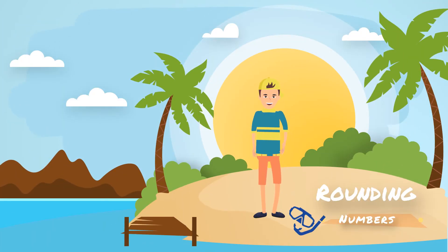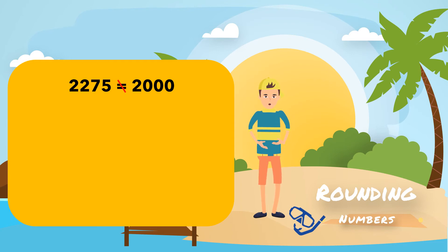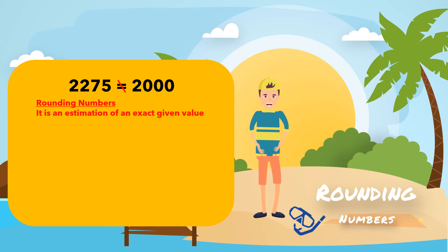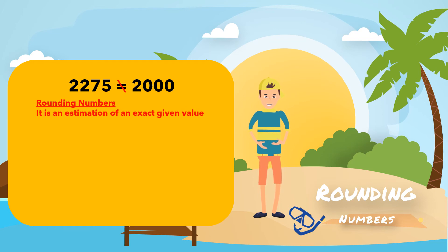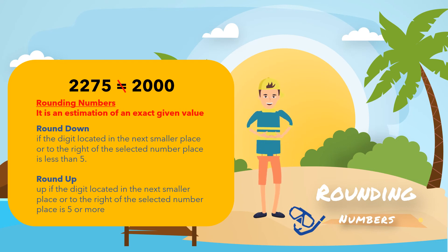There are 2,275 coral reefs around the world — or around 2,000. That is called rounding numbers, which is an estimation of an exact given value. This gives us different levels of precision. We need to know which number place we need to round to. Any digit smaller than the selected number place will be replaced with zeros, and any digit larger than the selected number place will be kept the same. We round down if the digit to the right of the selected number place is less than 5. We round up if that digit is 5 or more, and we increase the digit in the selected number place by 1.